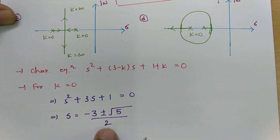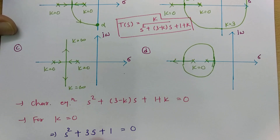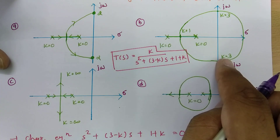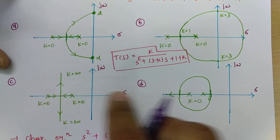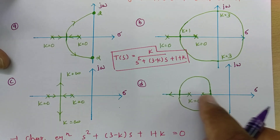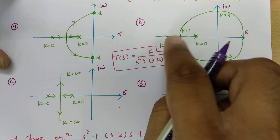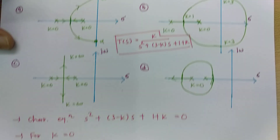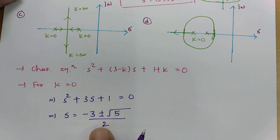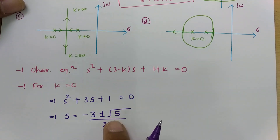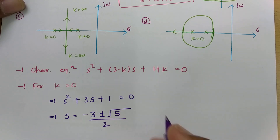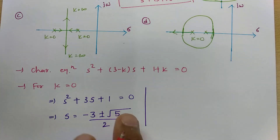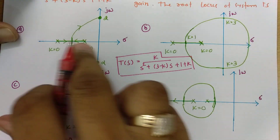At k equals 0, two different poles are occurring on the real axis. Looking at all four diagrams, we can see that two different real poles are present in each of them. So at this stage, since all four diagrams show two different poles on the real axis, we cannot yet distinguish which diagram is correct from the k equals 0 condition alone.